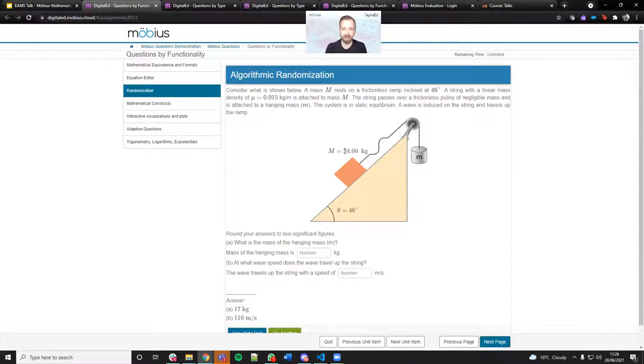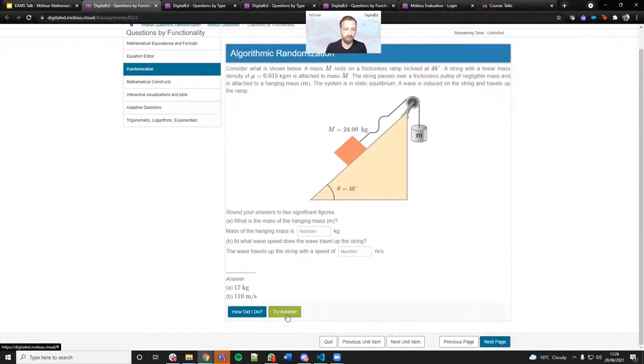If we keep an eye on the values, the mass of the objects and the angle of inclination, when I press try another we can see those are changing each time. As a student, this allows me to keep practicing this question until I'm happy with it and ready to move on.